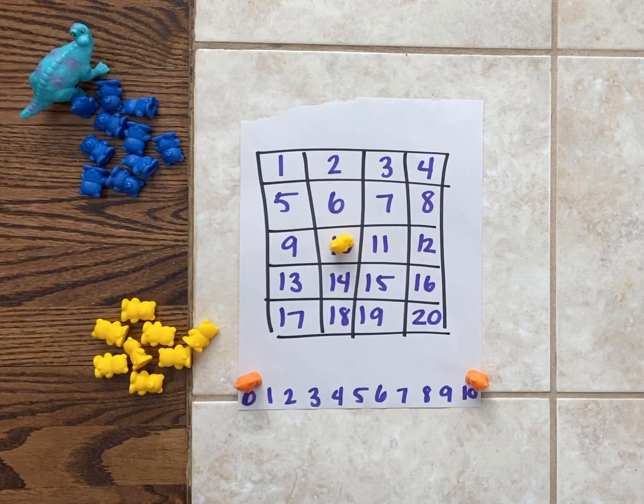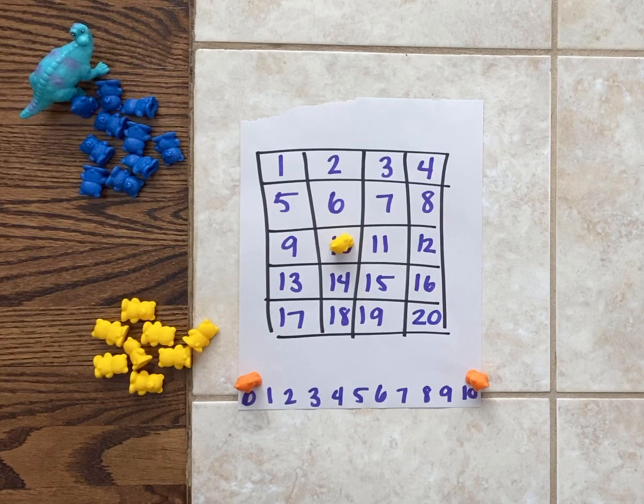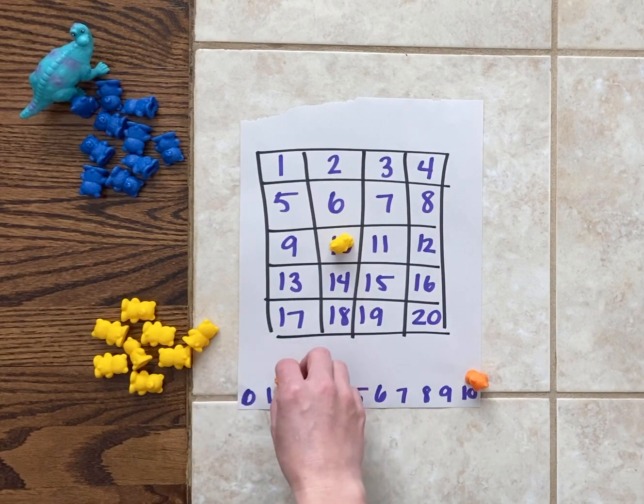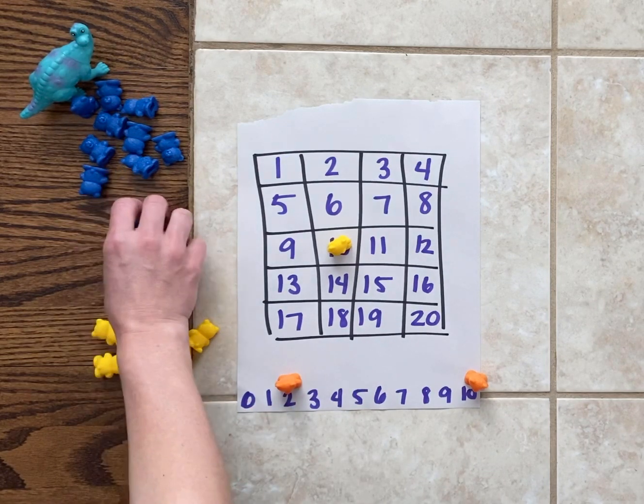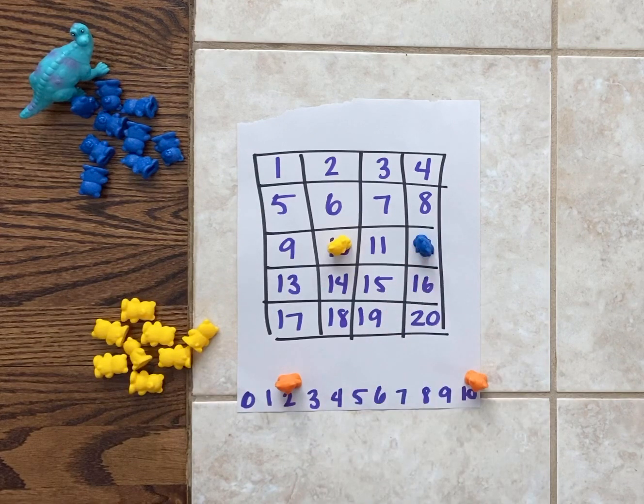So dinosaur has to decide where he would like to put his marker and think about if there's a way he can get that sum by just moving one of these. So dinosaur might do 10 plus 2, moving the 1 marker to the 2. 10 plus 2 is 12, so dinosaur can mark the 12.